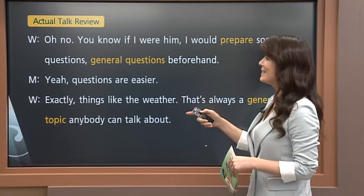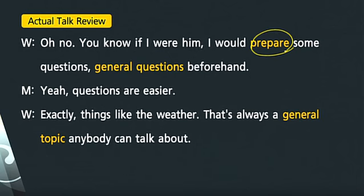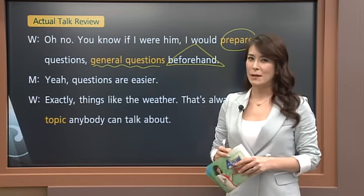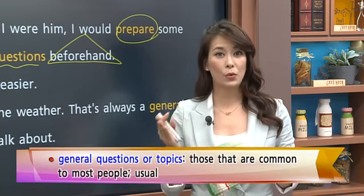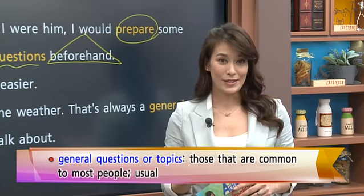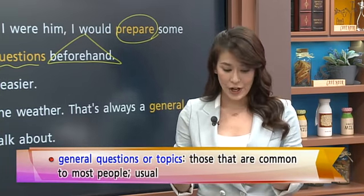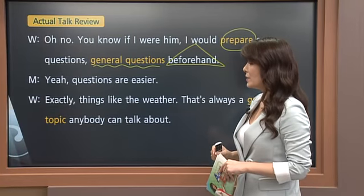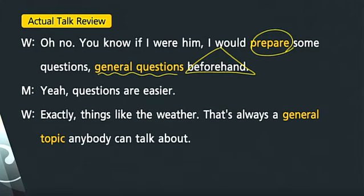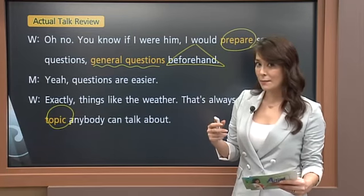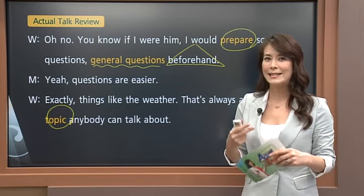Rachel feels sorry for this guy. She says: 'If I were him, I would prepare some general questions beforehand.' Beforehand means in advance. A general question or general questions are very common questions — usual questions that people may ask and answer. And Rachel says 'things like the weather — that's always a general topic anybody can talk about.' So now you know a general topic and general question are things that people commonly talk about and ask questions about.